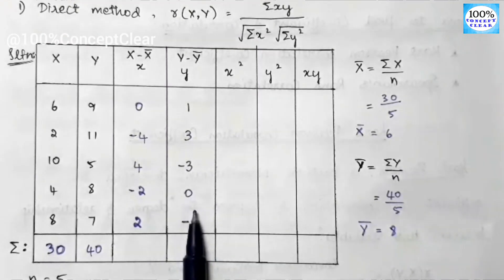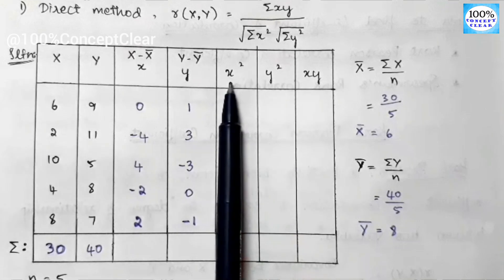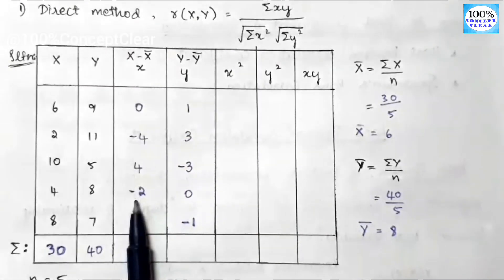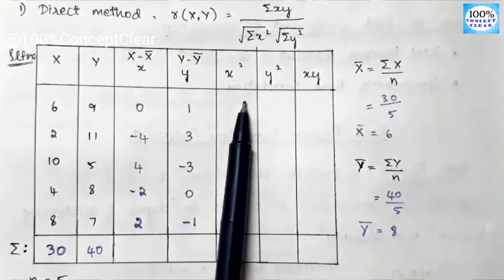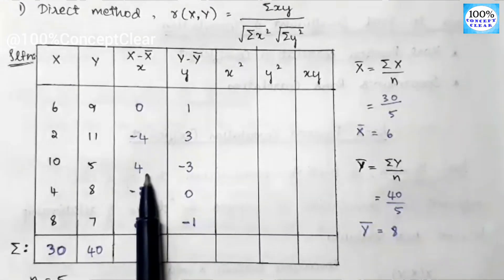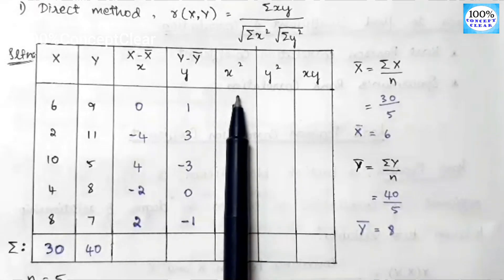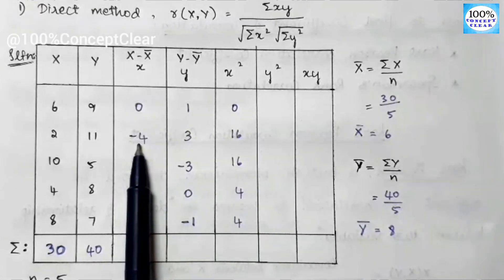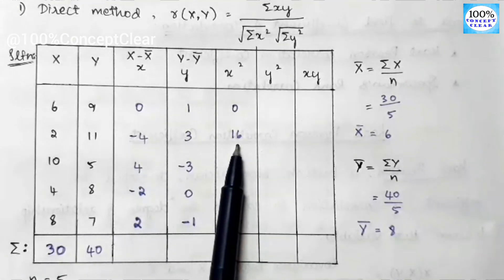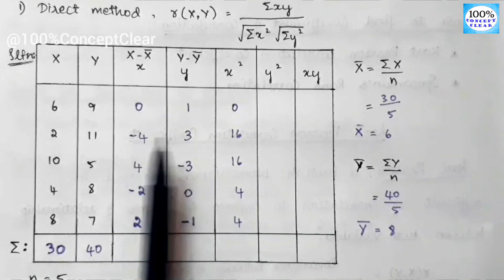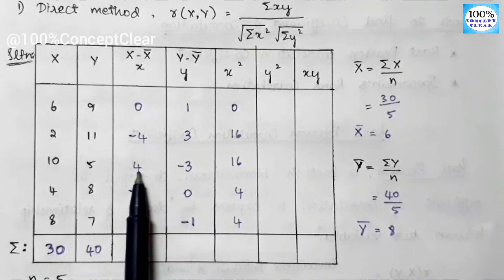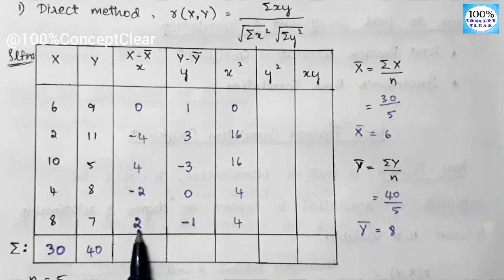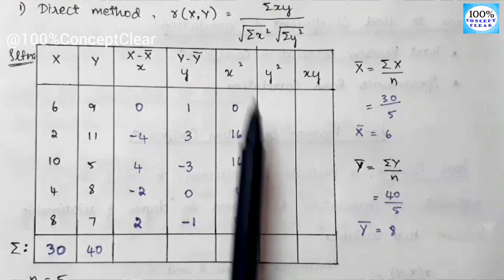Next we calculate x-squared (small x squared). The values are: 0² = 0, (−4)² = 16, 4² = 16, (−2)² = 4, 2² = 4. Then we calculate y-squared: 1² = 1, (−3)² = 9, (−3)² = 9, 0² = 0, (−1)² = 1.